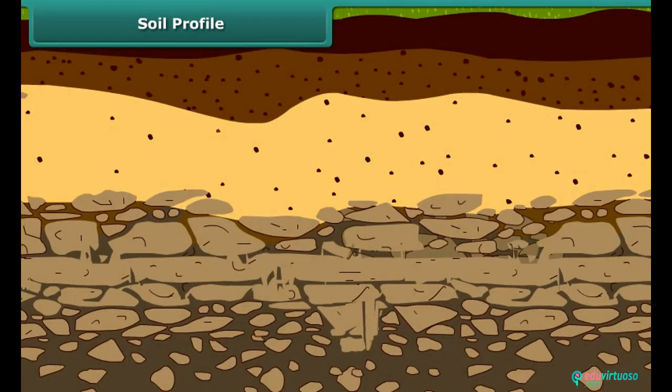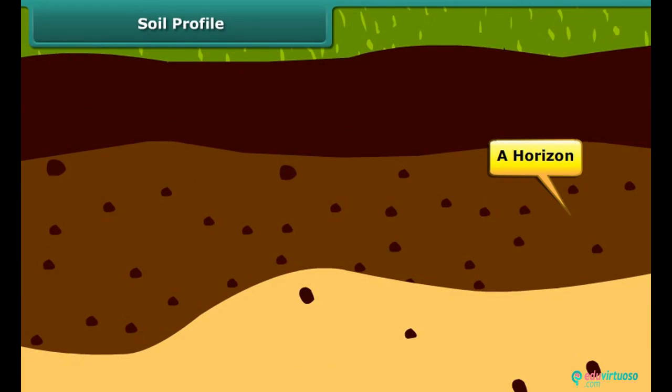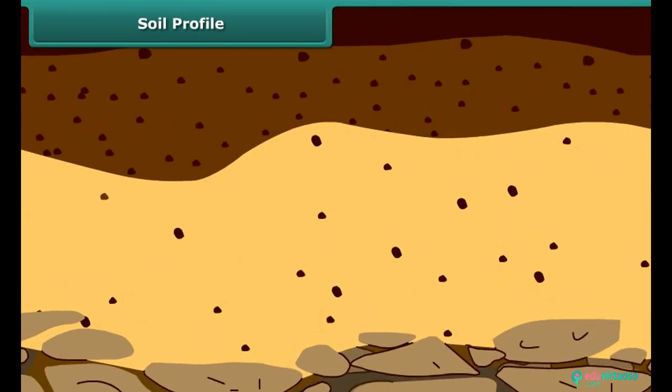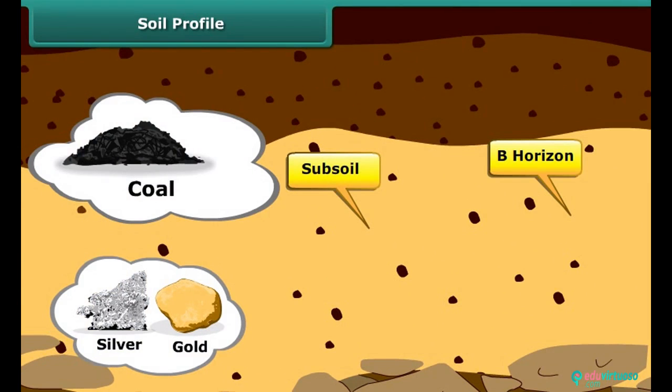Second layer is the A horizon. This is commonly known as topsoil. This layer has high concentration of organic material called humus. Many living organisms live in the topsoil. Third layer is the B horizon. It is commonly known as subsoil. This layer contains more minerals but less humus.